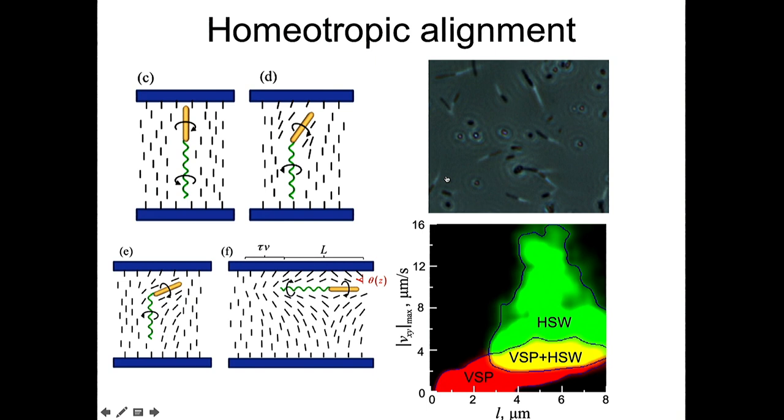And then, if the bacteria is relatively short and not very fast, it will become aligned parallel to the liquid crystal molecules perpendicular to the glass plates. It will spin the flagella, but it will remain vertical. And this bacteria is seen from the top as dots here.